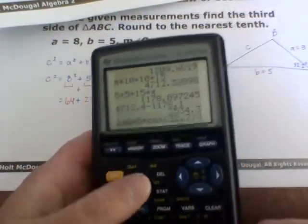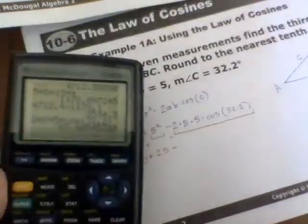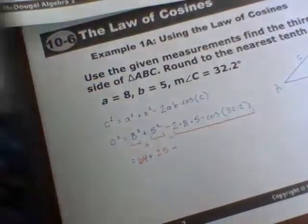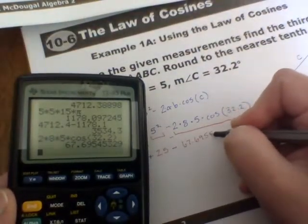because it's all multiplying, and as long as you're in degree mode, you can press enter, and you'll get 67.6955.